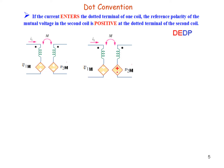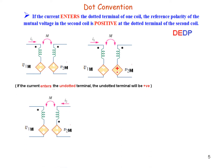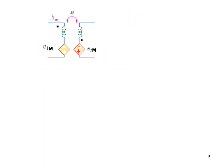For the other current: if current enters the undotted terminal, the undotted terminal will be positive — that is the bottom — so the bottom of V1M will be positive. There are two other cases: dot at the lower end with current entering it makes the lower end positive; current entering the non-dotted terminal makes the upper side positive. This is how we mark polarity of induced voltages.